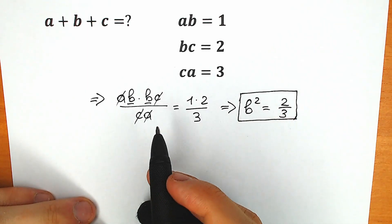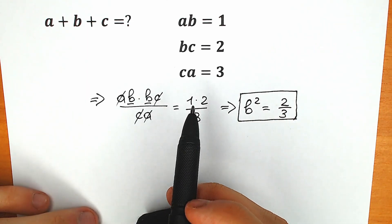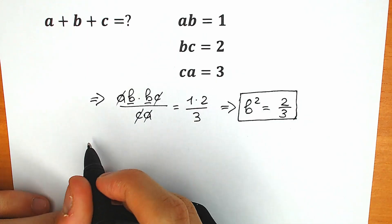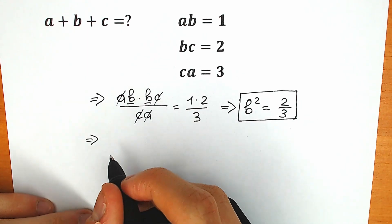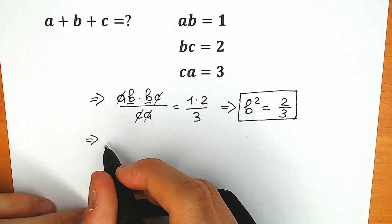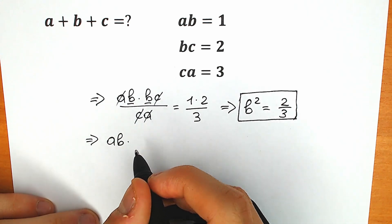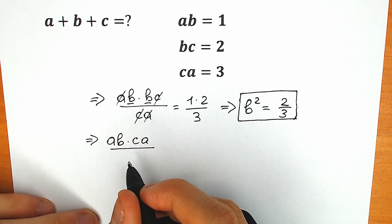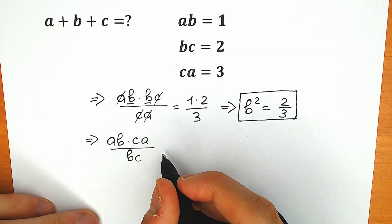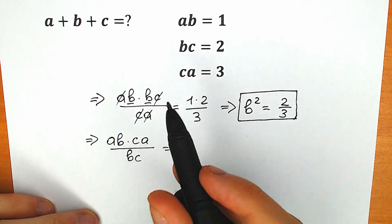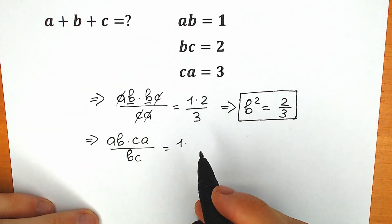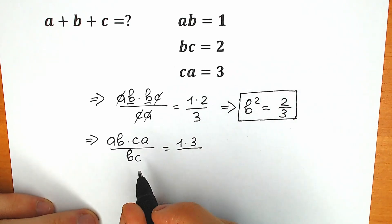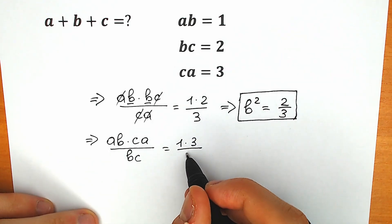Now let's use a different combination. Let's multiply ab times ca and divide it by bc. So we have ab times ca, divided by bc. We know ab equals 1, ca equals 3, and we divide by bc equals 2.